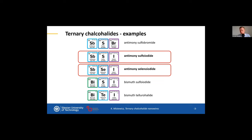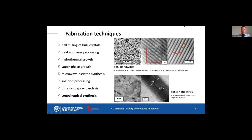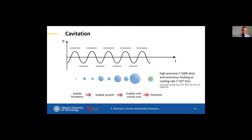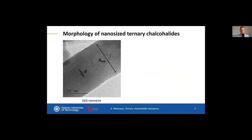In my opinion the most interesting are antimony sulfoiodide and antimony selenoiodide. They can be fabricated using different techniques. I use sonochemical synthesis to fabricate these materials. This technique is based on the application of high-power ultrasound to promote chemical reactions and it is a very simple and very fast method. It is based on the cavitation process, which provides unique conditions such as high pressure and enormous heating or cooling rates — conditions that are beneficial for the formation of one-dimensional nanostructures.